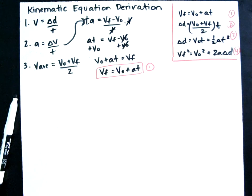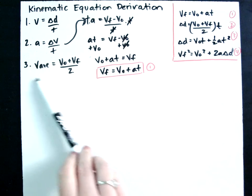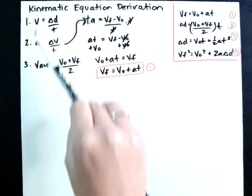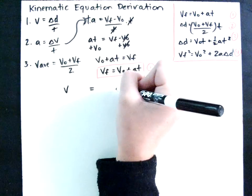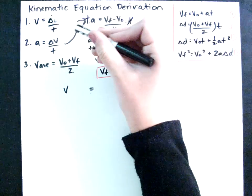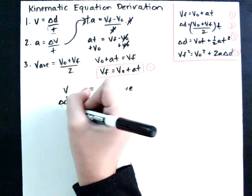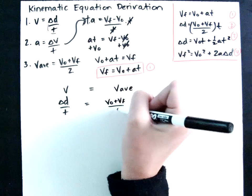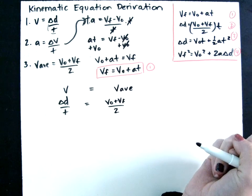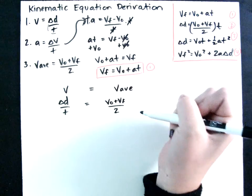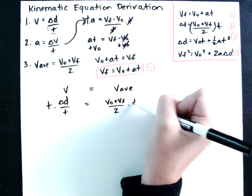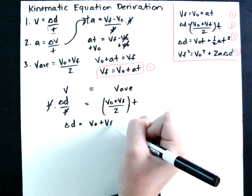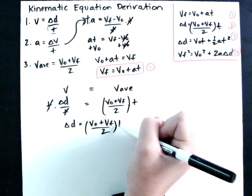Our second equation is found by equating the average velocity formula and the velocity definition, since both calculate velocity. Setting them equal: delta D over T equals V initial plus V final divided by 2. Solving for delta D, multiply both sides by T, and we're left with delta D equals V initial plus V final over 2 times time. There is our second equation.